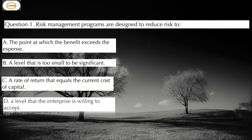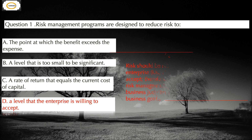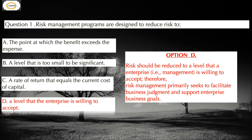The correct answer is Option D — the level that the enterprise is willing to accept. Option A is incorrect: depending upon the risk preference, that is a risk appetite, an enterprise may or may not choose to pursue risk mitigation to the point at which the benefit equals or exceeds the expense.